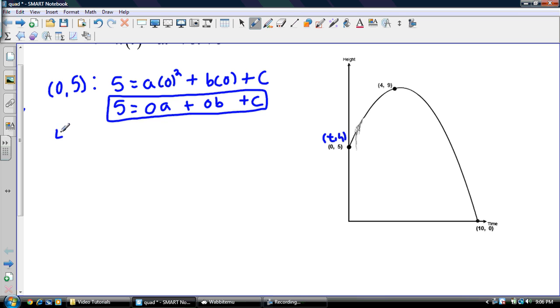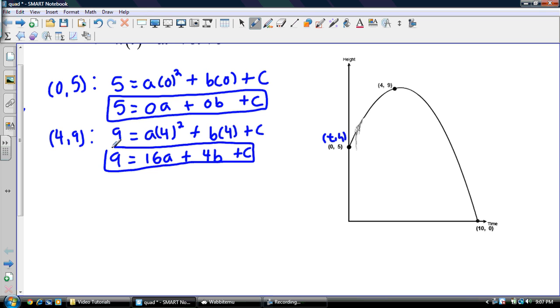And, this one is (4, 9). So, here we go. 9 is equal to a(4) squared, plus b times 4, plus c. And I'll reduce that down to 9 is equal to 16a, plus 4b, plus c. There we go.